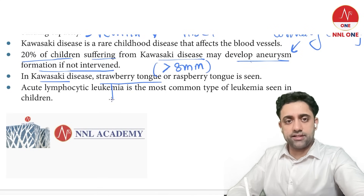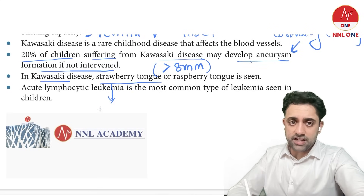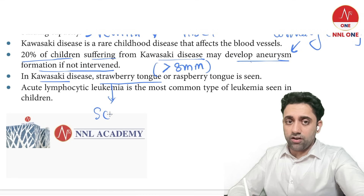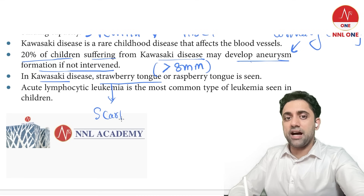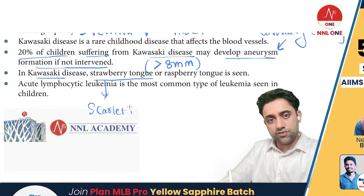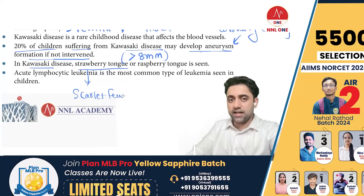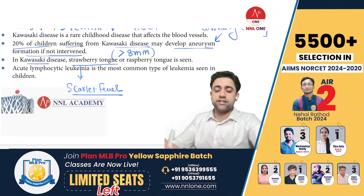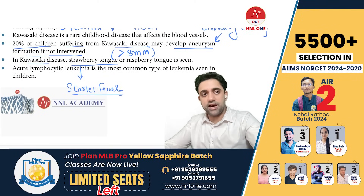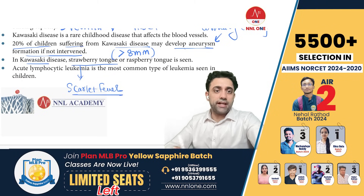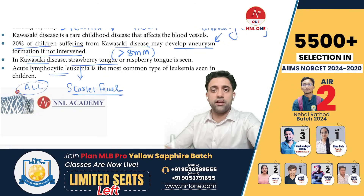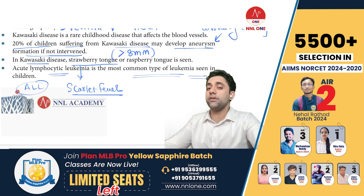Strawberry tongue is seen in both Kawasaki disease and scarlet fever — 'S for strawberry, S for scarlet fever.' It is also noted in acute lymphocytic leukemia, which is the most common type of leukemia seen in children.